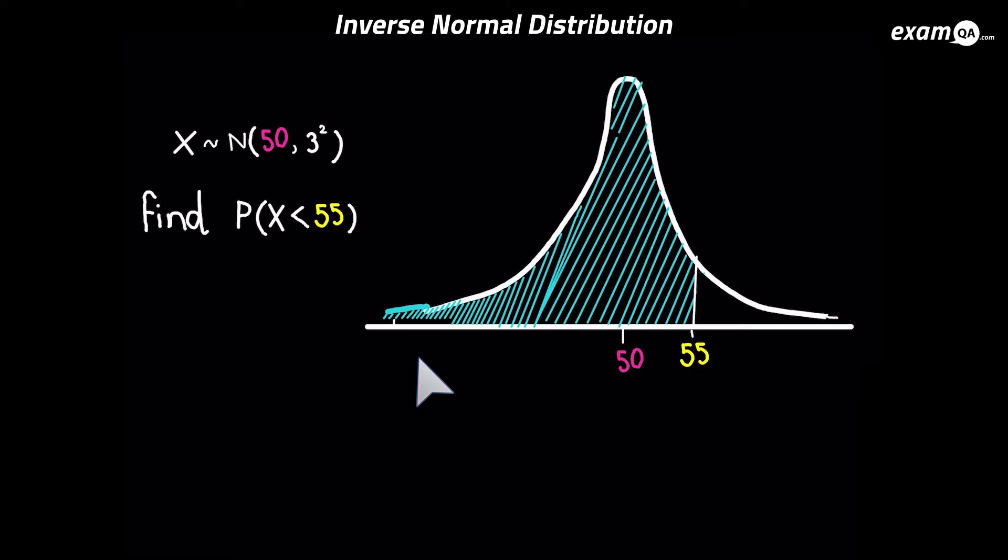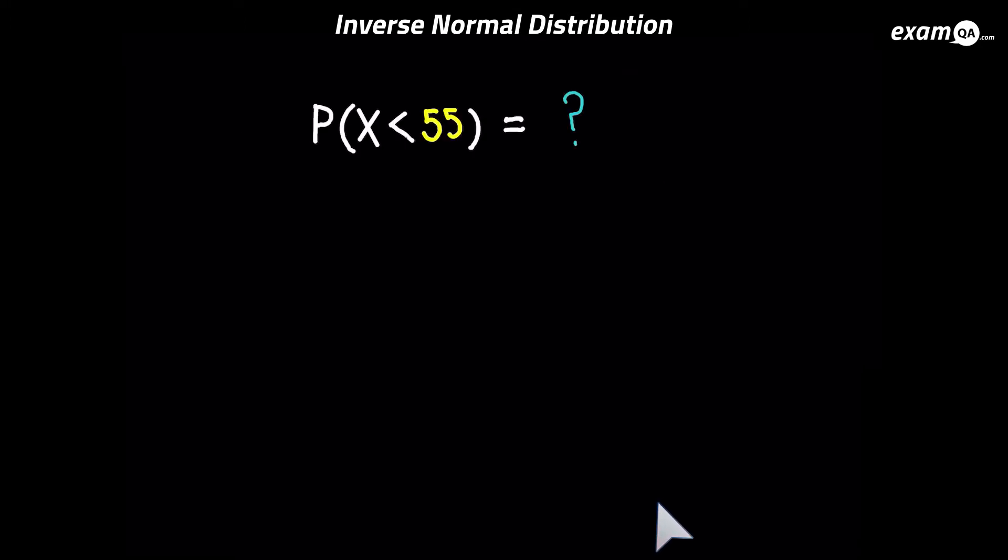But even if you put zero, you'd be very comfortable. Let me just simply get an answer: 0.95221. So basically we worked out that probability x less than 55 is 0.95221. Again, this is what we've done. We've worked out a question like this and we've got an answer.